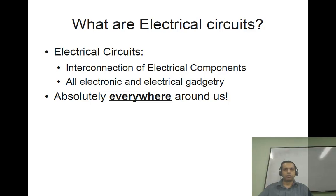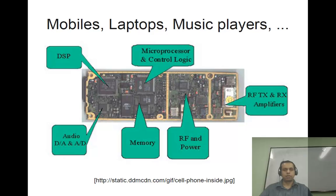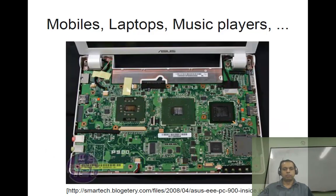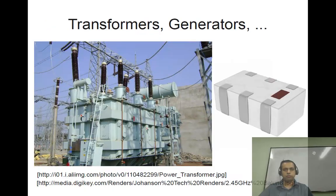They are absolutely everywhere around us. Just to give you some examples, this shows a teardown of a mobile phone that I took from the internet. It has a large number of electrical circuits, some of which are marked on this figure. Similarly, if you take a laptop, it also is basically a bunch of circuits. And just to use a different domain, here I have shown transformers. Many of you would have seen these outside while traveling or maybe outside buildings. The one on the left side is a very large transformer, probably the size of a room. The one on the right side is also a transformer, only a few millimeters in each dimension. Both these are transformers and the general principles are the same for both of them.